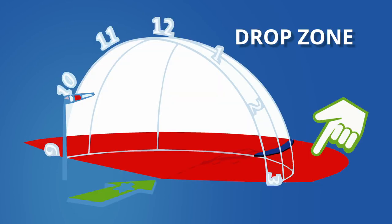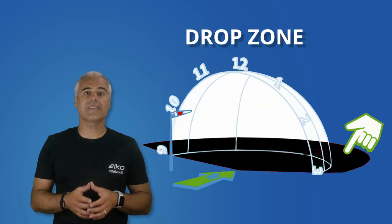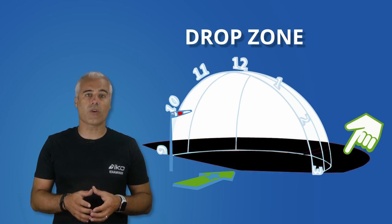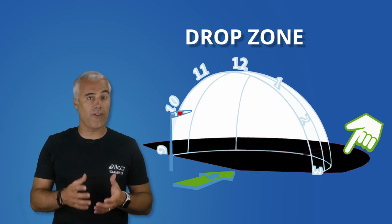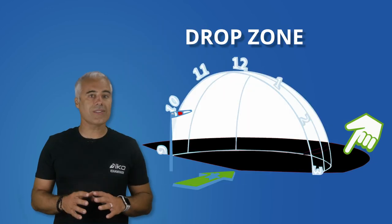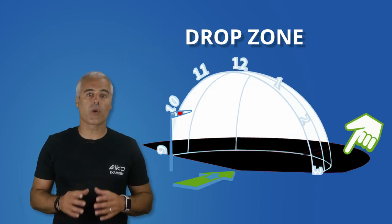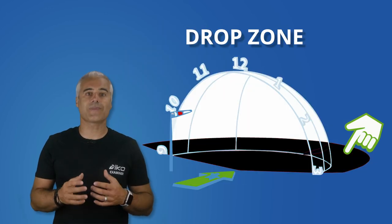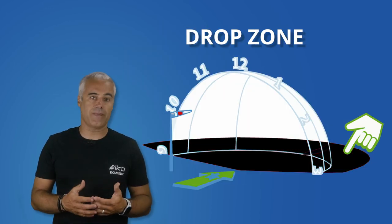The drop zone is everywhere underneath the wind window where the kite can fall, plus the size of the wingspan and the kite leash in extension — once the chicken loop is activated.